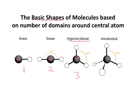Lastly, in this unit we're going to look at central atoms that have four domains around them. In this case, it's going to take on what's called a tetrahedral shape, and that angle is going to be 109.5 degrees.